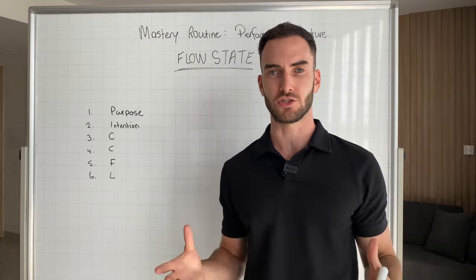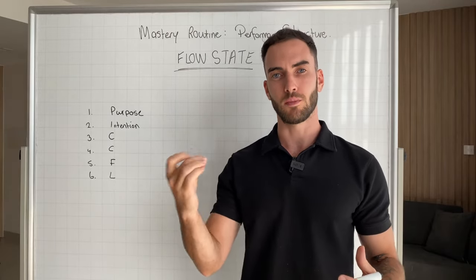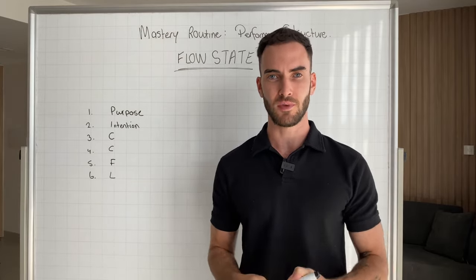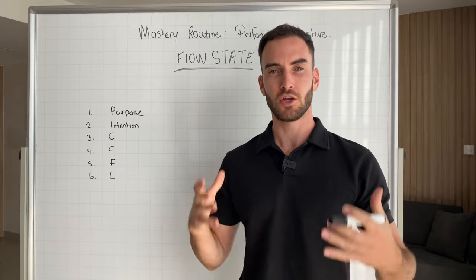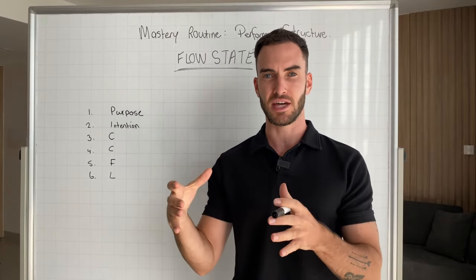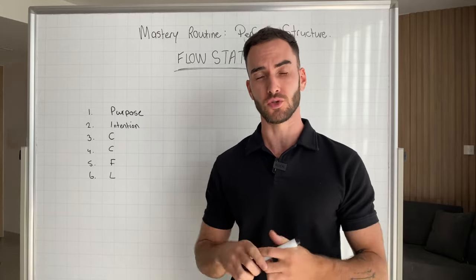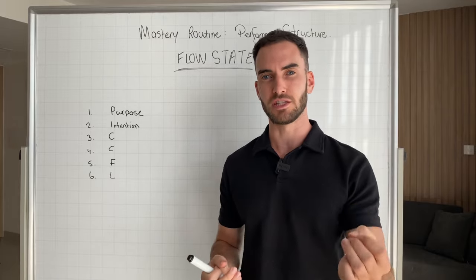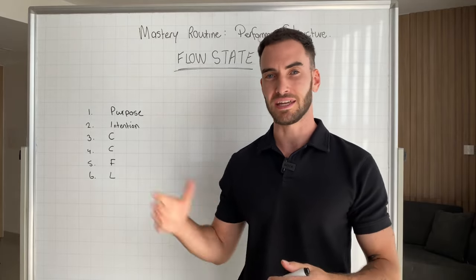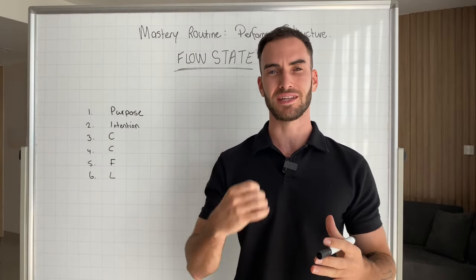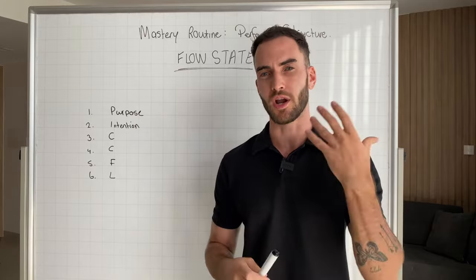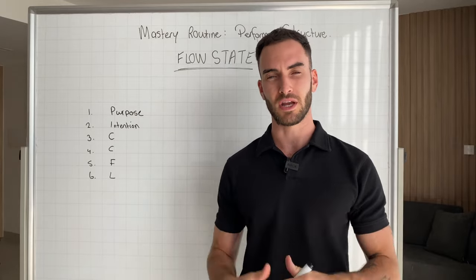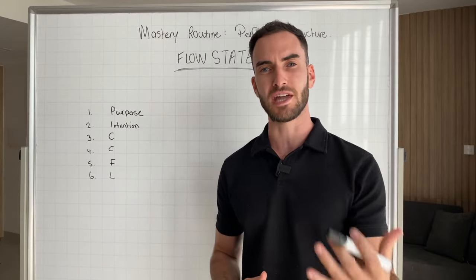Step two is intention. One of the best things you can do is cultivate a sense of intention in everything you do. Think about: what outcome am I trying to create by jumping into this deep work block? What is the ideal outcome I want at the end of this session? When you do this, you direct your mental energy toward the outcome you're trying to create. Personally, what I like to do is get into a meditative state — five to ten minutes — set my intention, and connect to the deeper purpose as well.